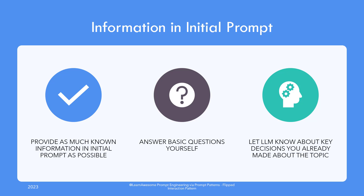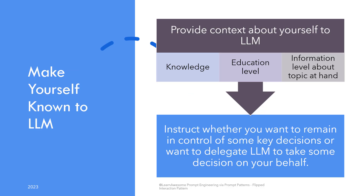In the worst case, if trying to limit questions to your set maximum, the model might not ask some basic questions and make guesses and assumptions. Another related aspect is to make yourself known to the model — that is, your knowledge and education level. For example, if you are starting a session about house prices in a region and you are a realtor yourself, making that known to the model would make a lot of questions meant for ordinary folks go away. Any flipped interaction session would involve key decisions, and you can let the model know in advance whether you would like to be involved via questions in every key decision.